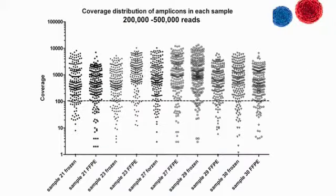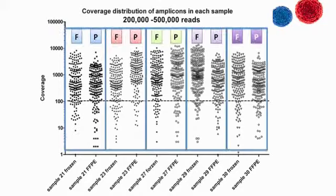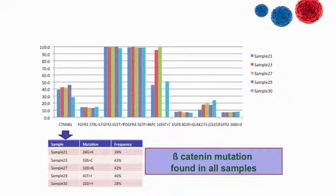What we actually have is coverage of 200 to 500 thousand reads. What is interesting is that frozen and paraffin of the same sample gave practically the same result — the very same result.